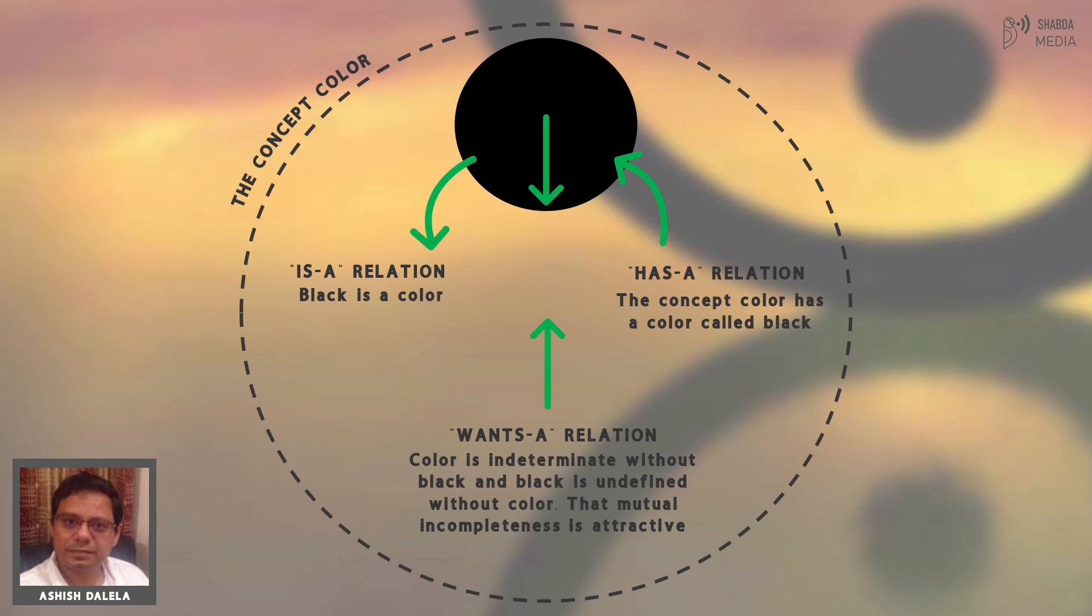There are two apparently contradictory statements in the Bhagavad Gita. In verse 6.30, Krishna says that for one who sees everything in me, and me in everything, I am never lost to him, nor is he lost to me. So here Krishna is saying that he is both imminent and transcendent.